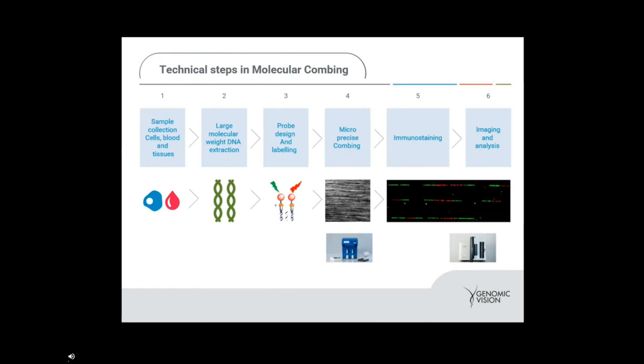There are a few steps in our molecular combing workflow. The first part is the collection of cells, blood, and tissues. Genomic Vision provides a kit called the FiberPrep kit that performs large molecular weight DNA extraction. Once that extraction occurs, we then have our genomic Morse code probe design, which can be designed custom, or we have numerous off-the-shelf assays that can be acquired. Those are then labeled.